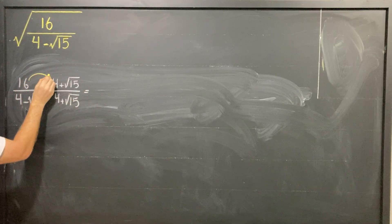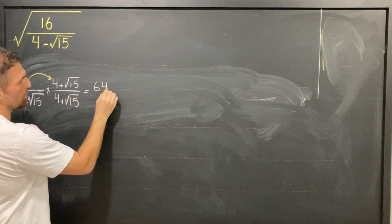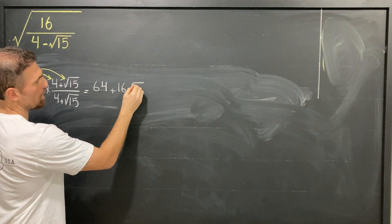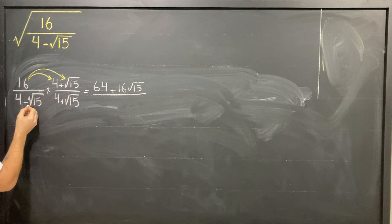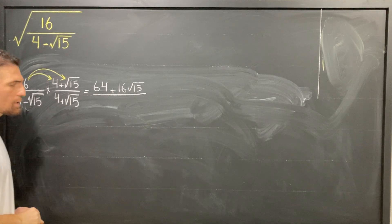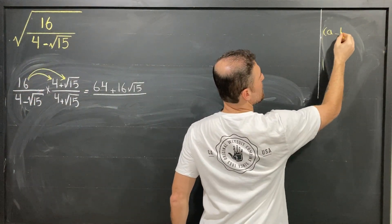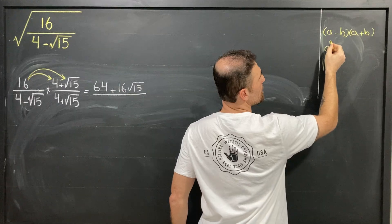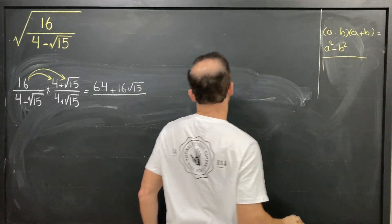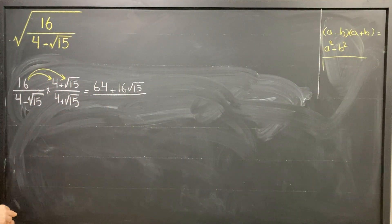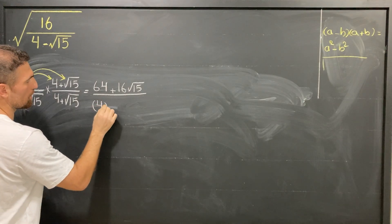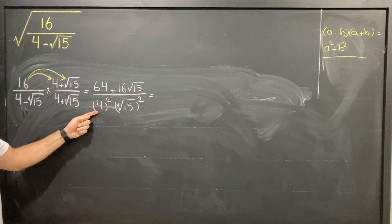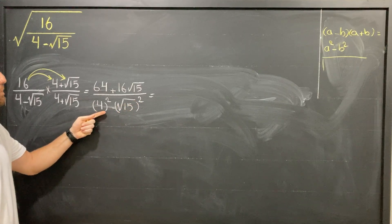16 times 4 is going to be 64. 16 times square root of 15 is going to be 16 square root of 15. Now (4 minus square root of 15) times (4 plus square root of 15) is in the form of (a minus b)(a plus b), which equals a squared minus b squared. So 4 squared is 16, square root of 15 squared is 15, and 16 minus 15 is 1. The denominator becomes 1.